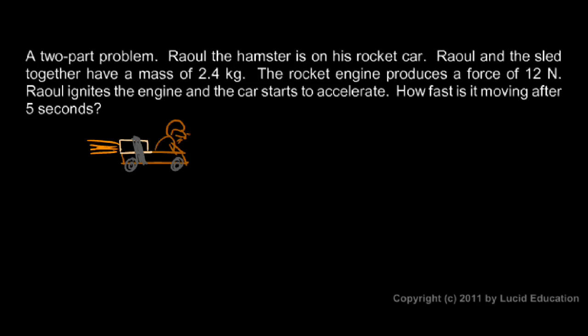Raul and the sled together have a mass of 2.4 kilograms. That's our M. So let's write that down. M is 2.4 kilograms. And then we're told the rocket engine produces a force of 12 newtons. So let's write that down. F equals 12 newtons.